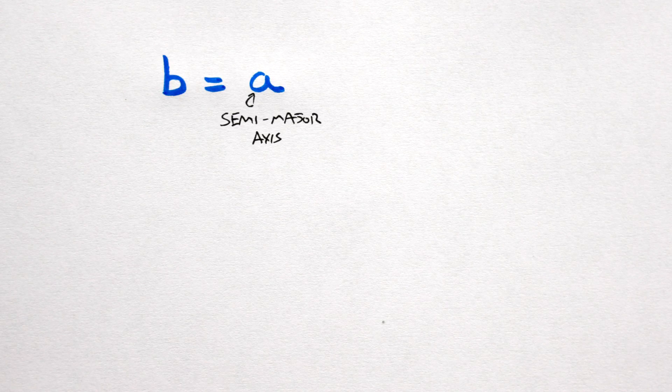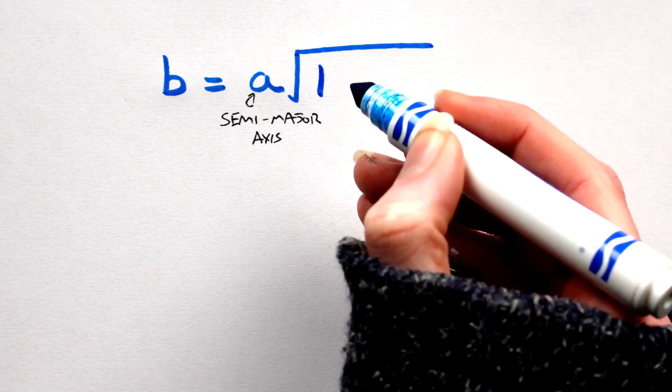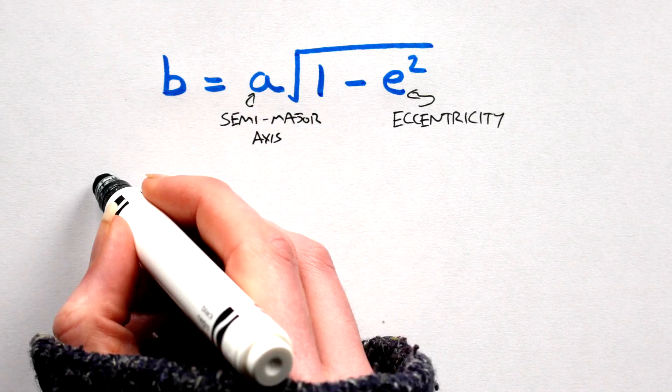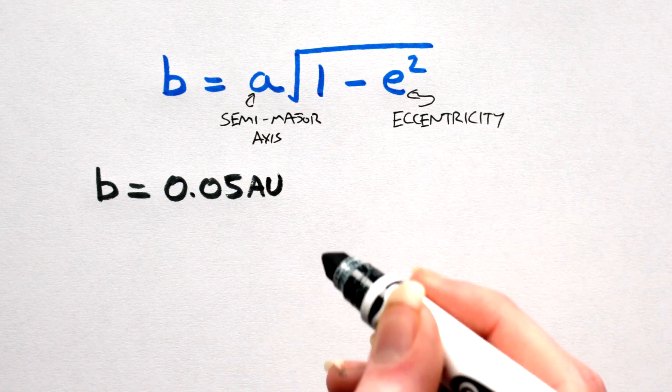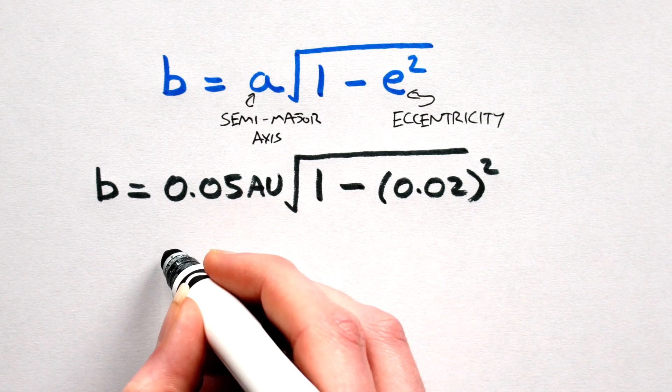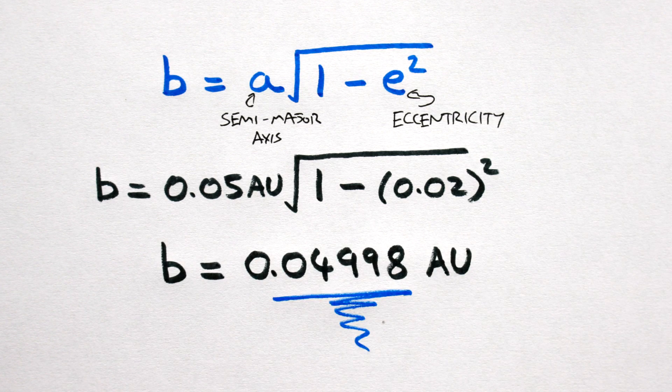B is given by A, the semi-major axis, multiplied by the square root of 1 minus the eccentricity squared. Remember, we set A at 0.05 AU and E at 0.02. Therefore, B will equal 0.04998 AU.